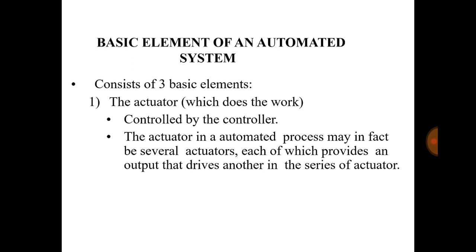For rotating the spindle, there is also a separate motor. So a CNC machine consists of three different motors for moving along X, Y, and Z axes, and one separate motor for rotating the spindle. These motors are the actuators of that CNC machine. For operating the chuck of the machine you need a hydraulic power pack, and for operating that hydraulic power pack you again require a motor. So for actuating the chuck of the machine you are using a hydraulic drive.